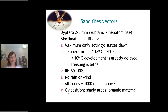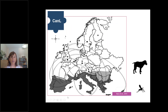Leishmania has a very specific climatic distribution directly related to the needs of this tiny insect. All over the world, we have important endemic areas, and others are starting to become more endemic or hypoendemic. This is a good example in Europe that can be extrapolated to South America or even to Central and North America, as things are changing a lot due to many global changes.